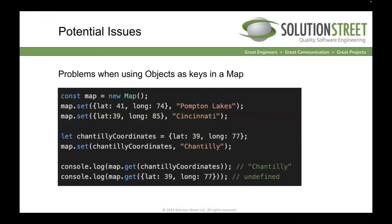Another potential issue is using objects as keys in a Map. If I have a map with coordinate key-value pairs and I create a 'Chantilly coordinates' object with latitude 39 and longitude 77, I can get 'Chantilly' back using that same object reference. But if I use a different object with the same values — latitude 39, longitude 77 — because of identity equality, I'll get back undefined from my map.